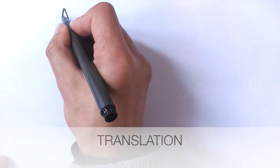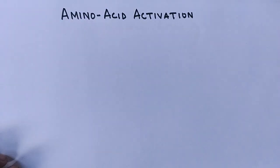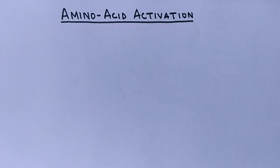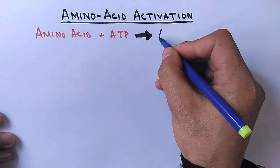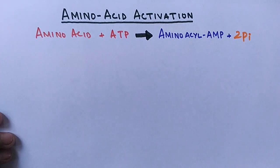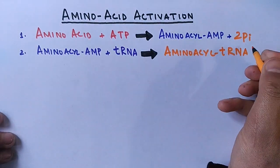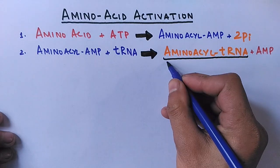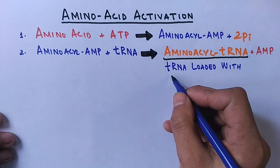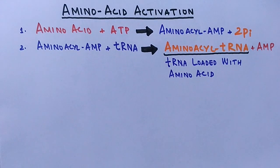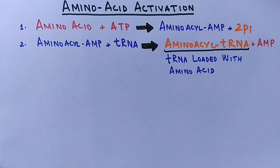We encounter codons and anticodons at the time of translation, specifically during amino acid activation. In the first step, an amino acid combines with ATP to give amino-acyl AMP plus two phosphates. This amino-acyl AMP then combines with tRNA, since tRNA carries the amino acid to the ribosome, giving us a cognate tRNA or charged tRNA — also called amino acid-tRNA.